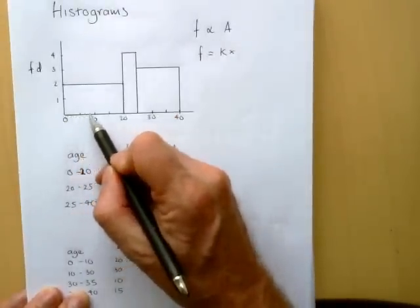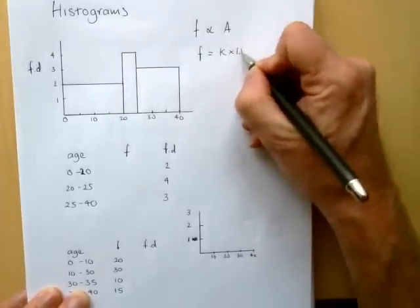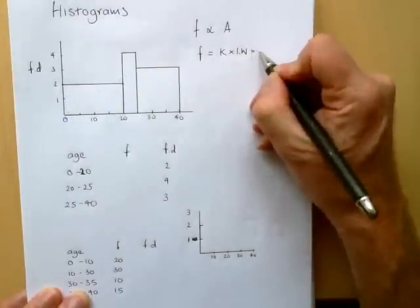And the area of the bar can be found doing base times the height. And the base, of course, is the interval width, and the height is the frequency density.